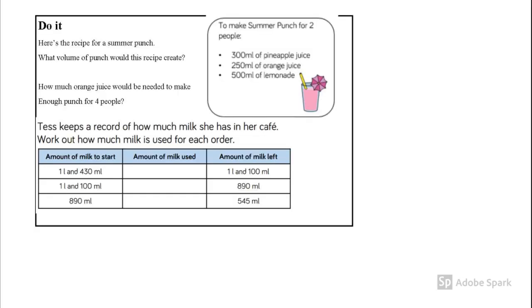You may wish to pause the slide here to have a careful look at the do it section before having a go in your workbook or on a piece of paper. It's all about a recipe for summer punch and about milk in a cafe. See if you can use the bar model to show how you have solved it. You might show different workings. See how well you can get on with adding and subtracting capacities and volumes.